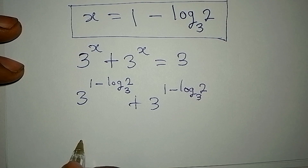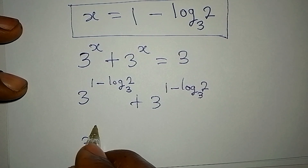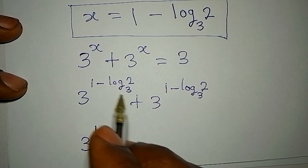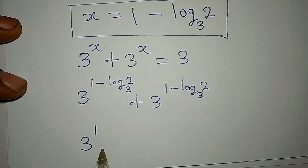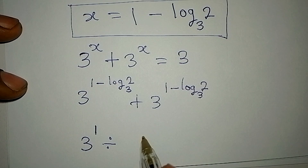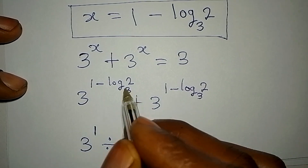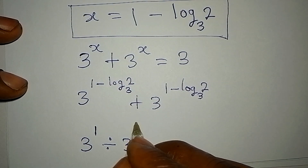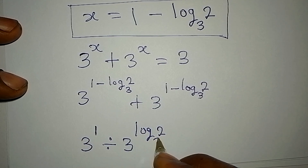Let's break this down very quickly. This is the same thing as 3 to the power of 1 — trying to break the power down because of this subtraction — which means we are dividing: divided by 3 to the power of log 2 to base 3.